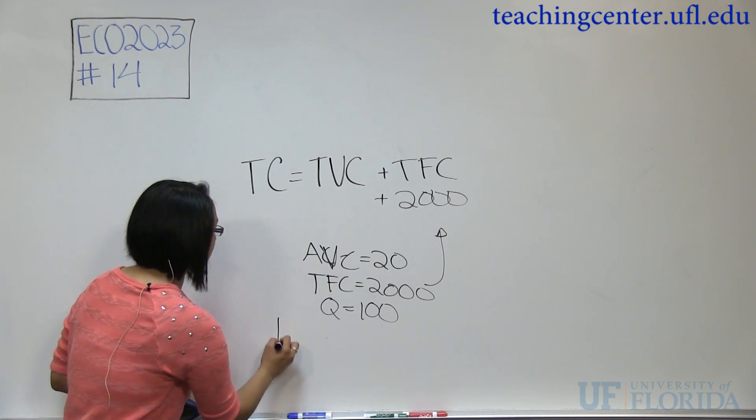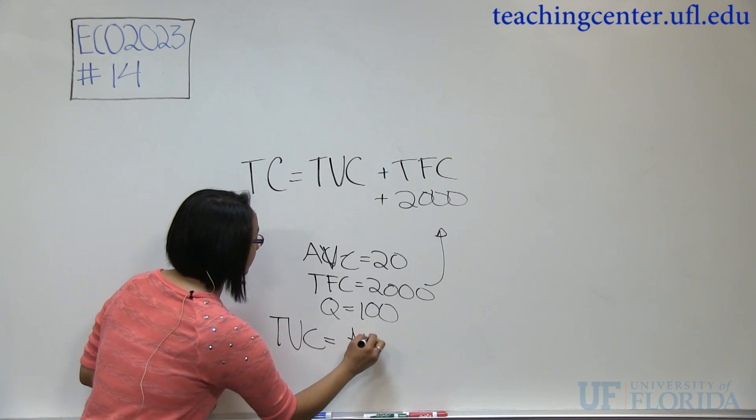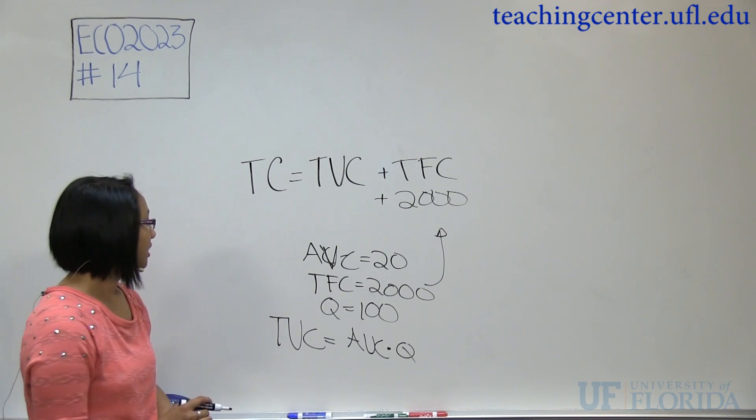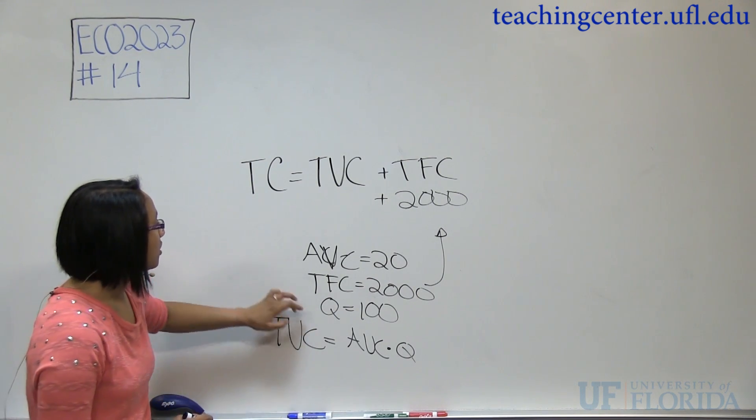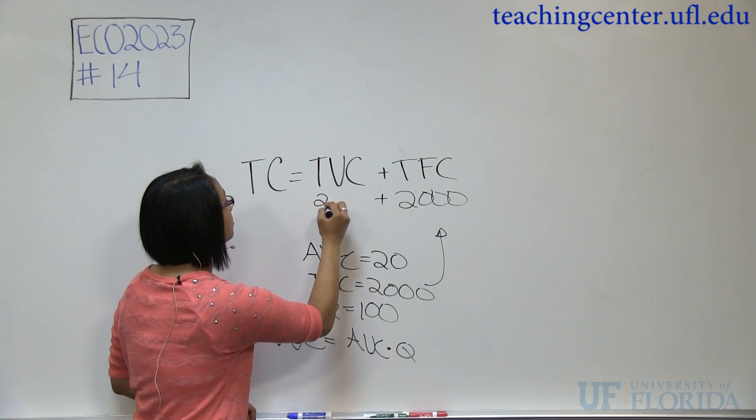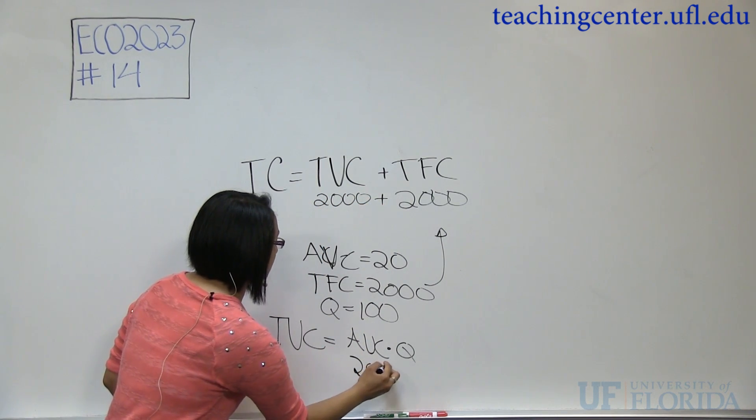You know that TVC equals AVC times quantity. So if we multiply 20 by 100, we get 2,000.